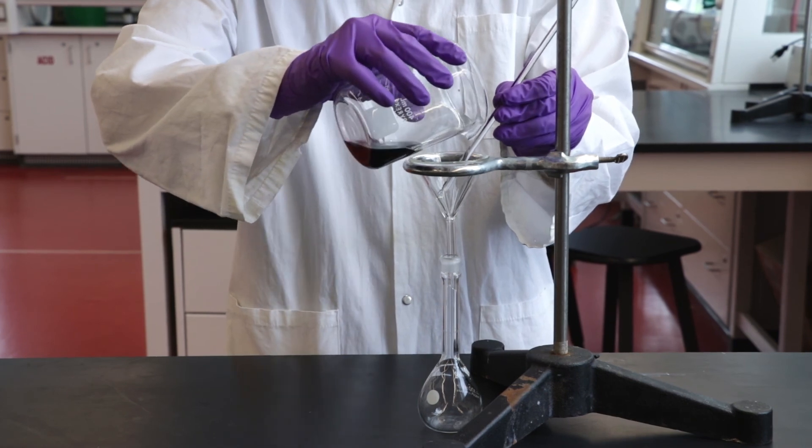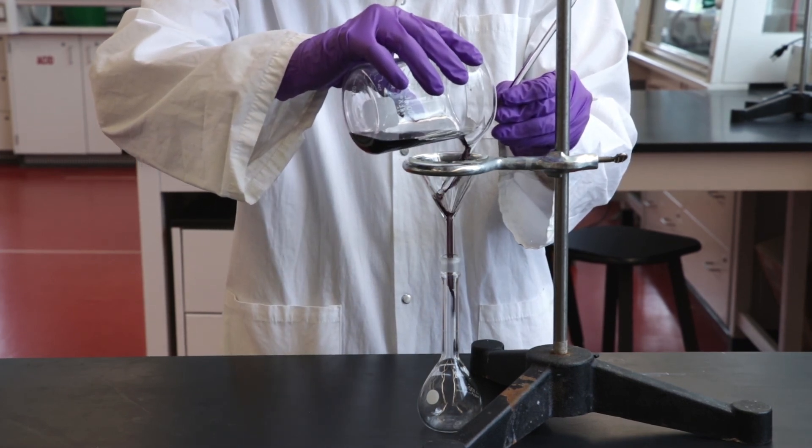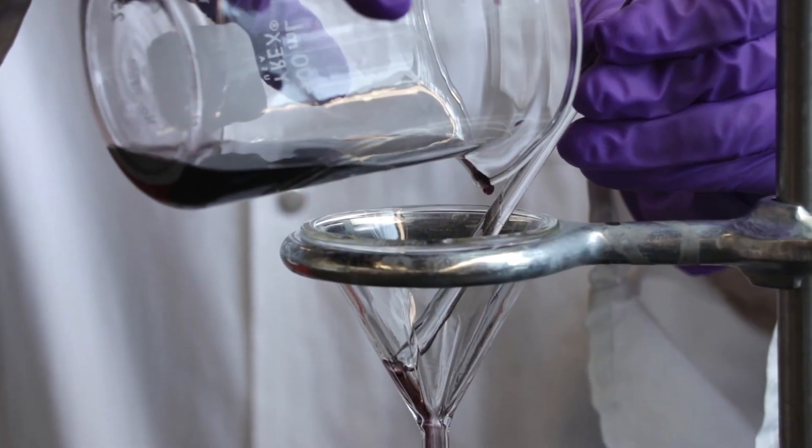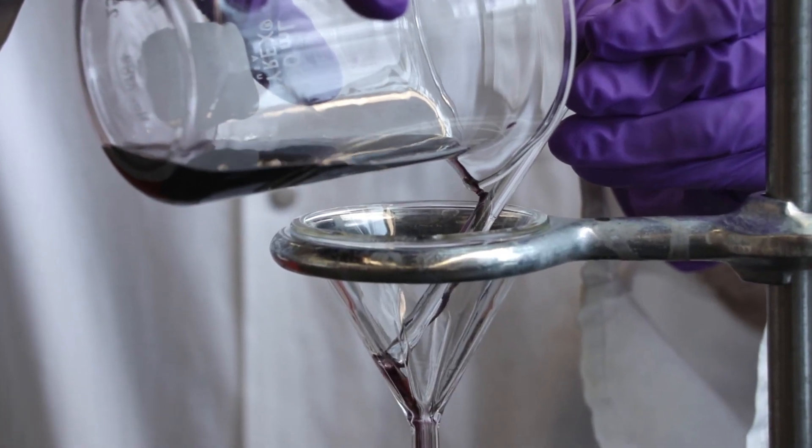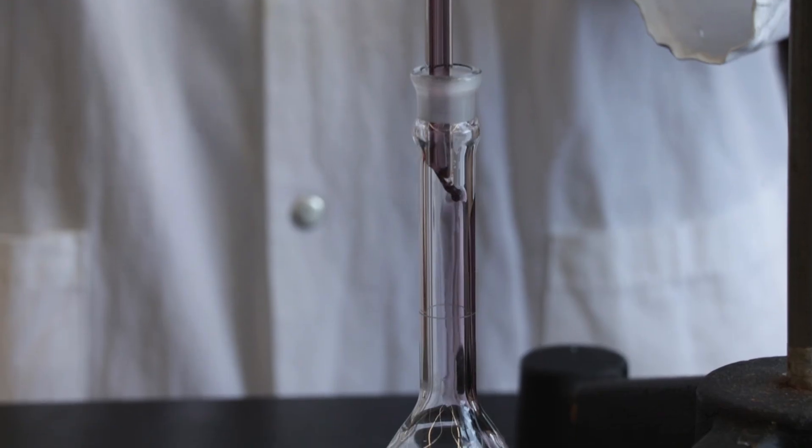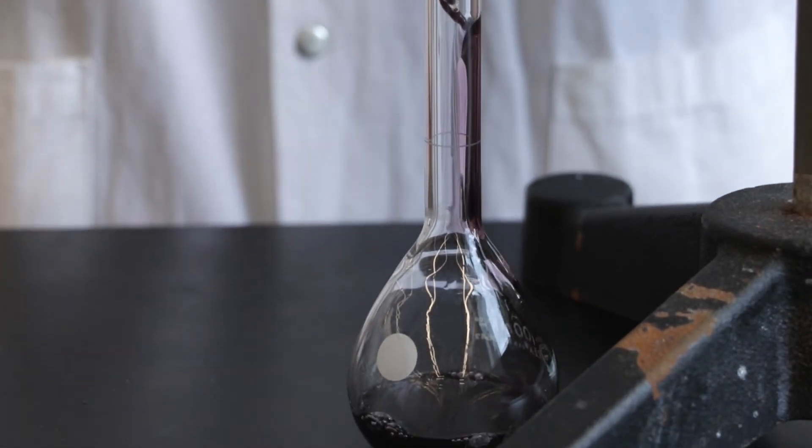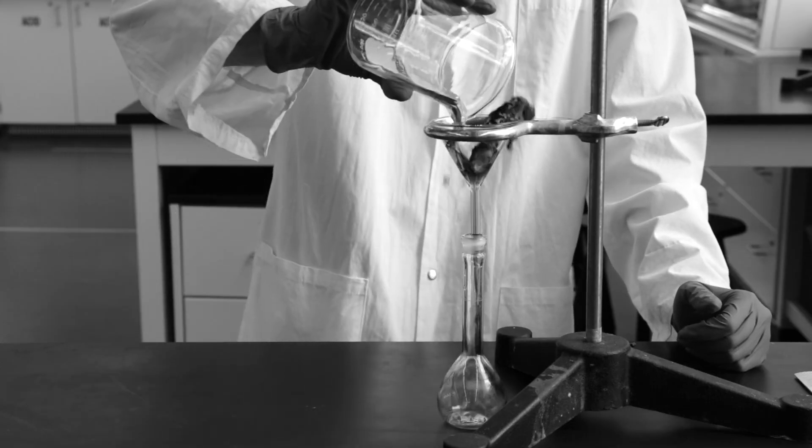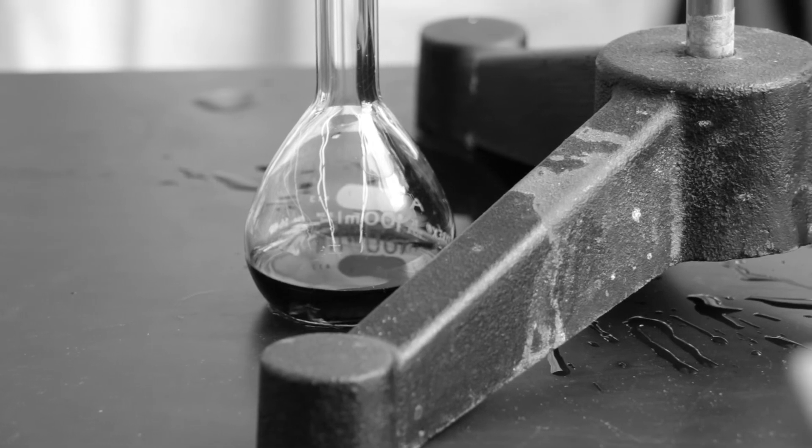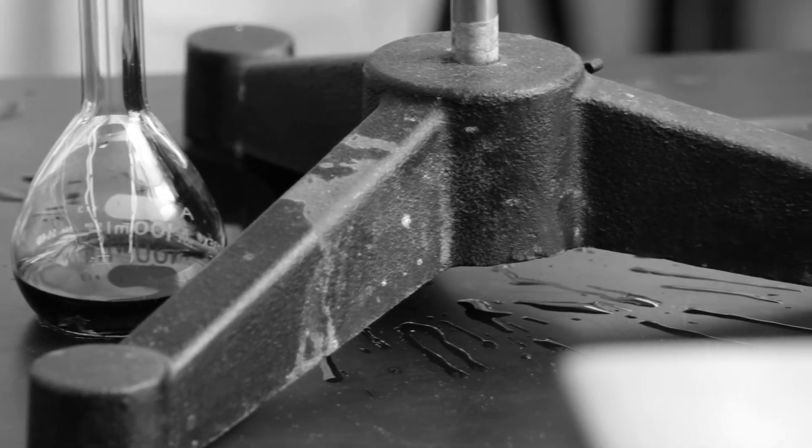Now pour the Kool-Aid solution down a glass rod into the volumetric flask. The purpose of the glass rod is to prevent splashing of the solution outside of the volumetric flask. When a glass rod is not used, splashing is more likely to occur. Notice how some of the solution is lost.